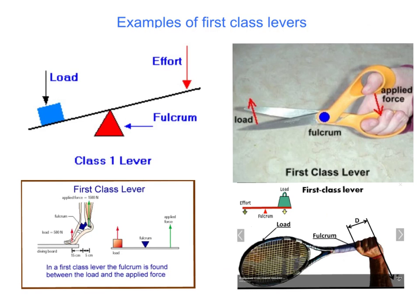Examples of first class levers include scissors, where the fixed point or fulcrum is in the center, the effort or applied force is on one side, and the load or resistance is on the other. A diver standing on a diving board also acts as a lever, with the fulcrum, effort force, and resistance identified. Swinging a tennis racket also works as a first class lever, with a pivotal point, effort, and load.